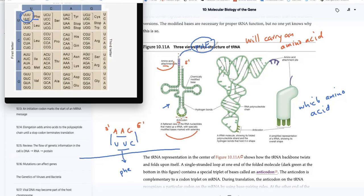Without tRNA molecules, we don't have anything capable of carrying the appropriate amino acids to protein synthesis. We also need many different kinds of tRNA molecules because each anticodon must correspond to one particular amino acid. Hypothetically, this means we could have 64 different tRNA molecules, each carrying a different amino acid, or maybe four of them might be carrying the same amino acid.